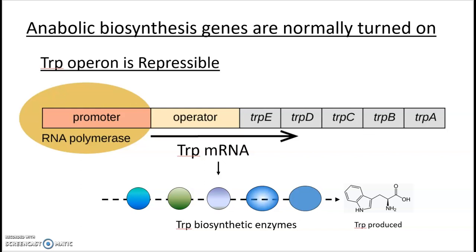When we look at anabolic genes for biosynthesis, you always want those genes making their products. But if you've got too much of something — just like with end product inhibition — too much wastes energy. The cell can save energy by regulating biosynthesis genes. Looking at the tryptophan biosynthesis operon: it is a repressible operon. RNA polymerase normally binds to the promoter, reads through the operator, and transcribes a polycystronic message coding for five different enzymes that take a precursor and convert it into the amino acid tryptophan.